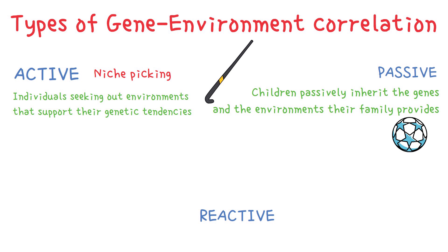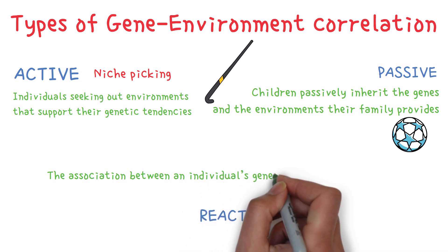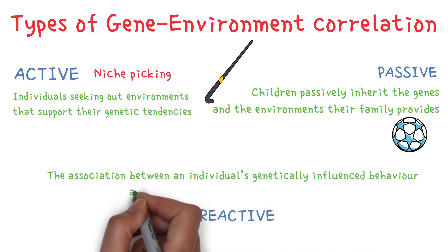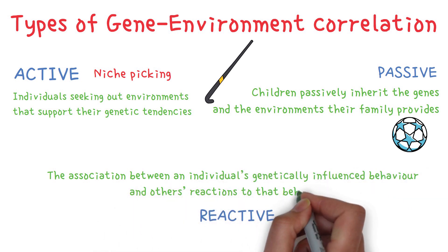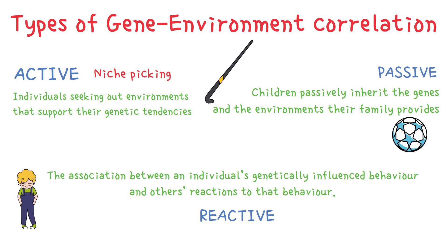Finally, we have reactive genotype-environment correlation. It refers to the associations between an individual's genetically influenced behavior and others' reactions to that behavior. For example, a kid's violent tendencies could make his classmates avoid him — his behavior evokes avoiding behavior from others. Or, if you're a very shy person, a teacher might treat you differently than they would an extroverted kid.